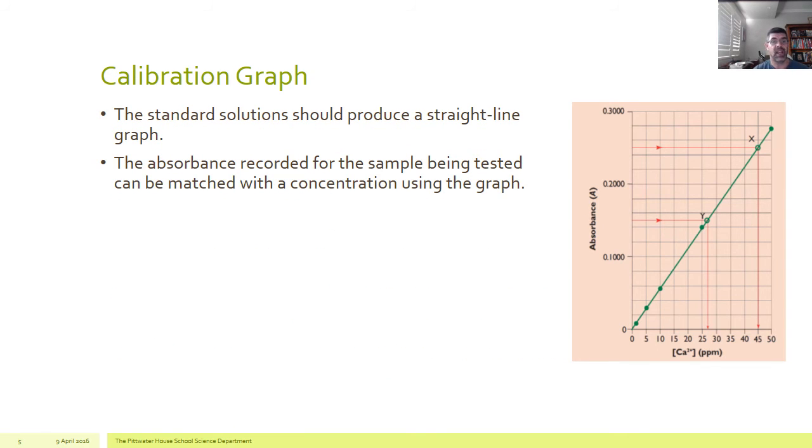This is an example of a calibration graph. So you can see that there's a number of different values which have been put in to create this graph. There's another one here. And there's another one here. And they sit on a straight line and the graph's been drawn.